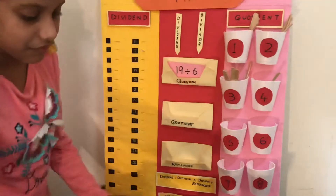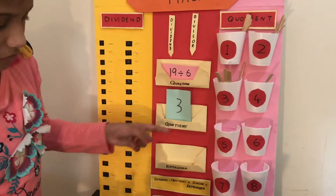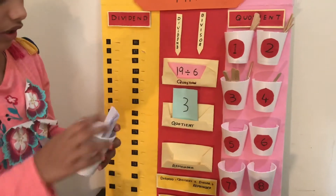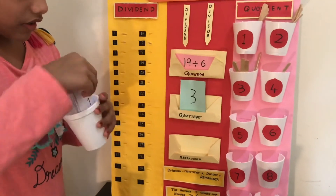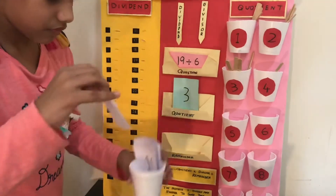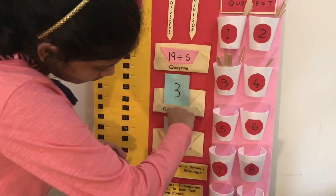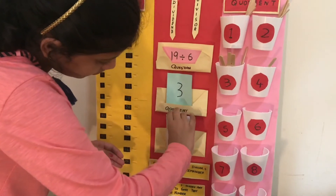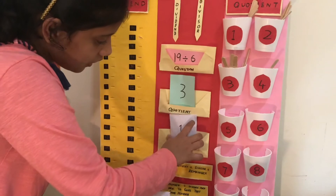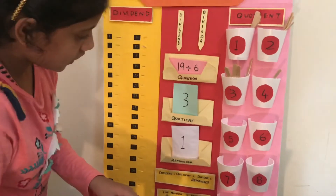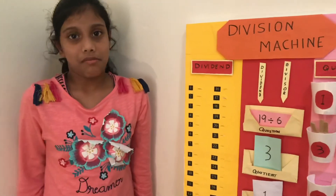Quotient is 3. Let's put 3 in the quotient box. Now let's put 1 in the reminder box. We got the remainder as 1 and the quotient as 3. It's so simple.